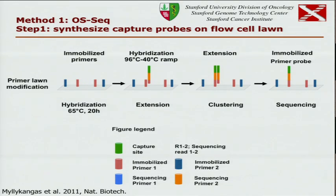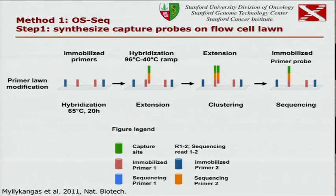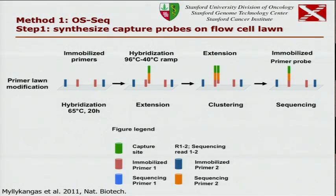For the first method, instead of doing the capture in solution and then manipulating the captured material — adding adapters and whatnot — and then creating the sequencing library and going on to the flow cell of an Illumina sequencer, what we do is modify the lawn of the flow cell.